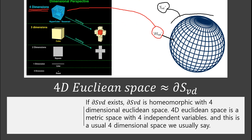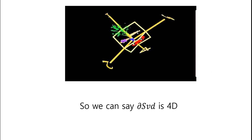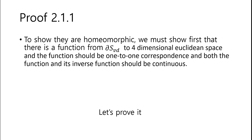4D Euclidean space is a metric space with 4 independent variables, and this is the usual 4-dimensional space we usually refer to. So we can say DS3D is 4D. To show they are homeomorphic, we must show first that there is a function from DS3D to 4-dimensional Euclidean space. The function should be one-to-one correspondence, and both the function and its inverse function should be continuous.